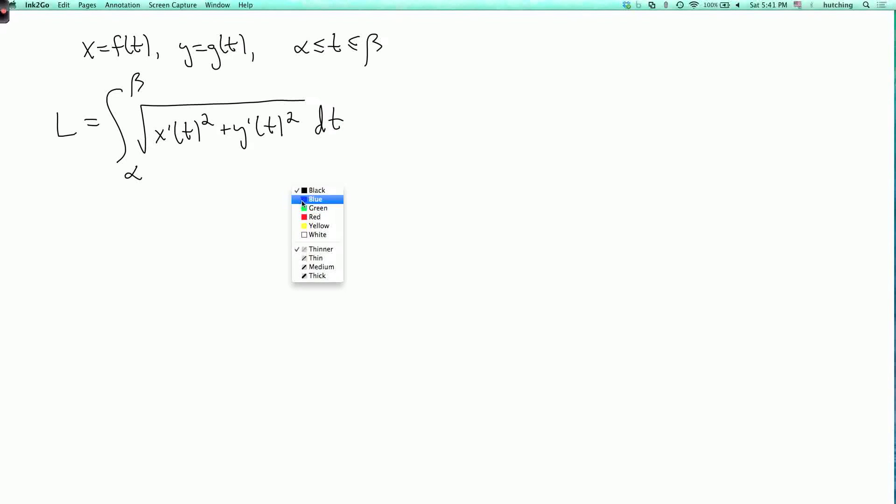And there's a shorthand for this. This whole integrand, square root of x prime squared plus y prime squared dt, is sometimes denoted by ds, and ds is sometimes called the element of arc length.